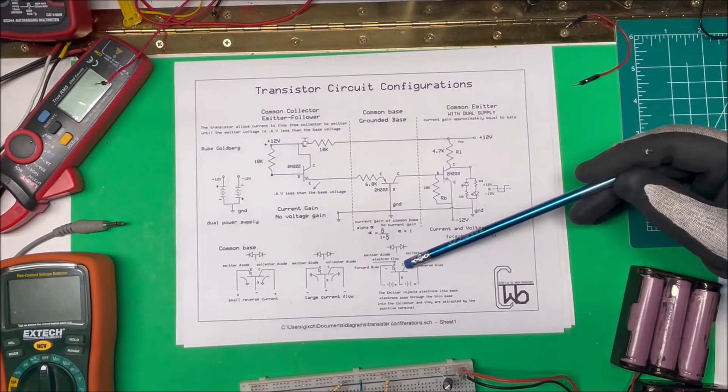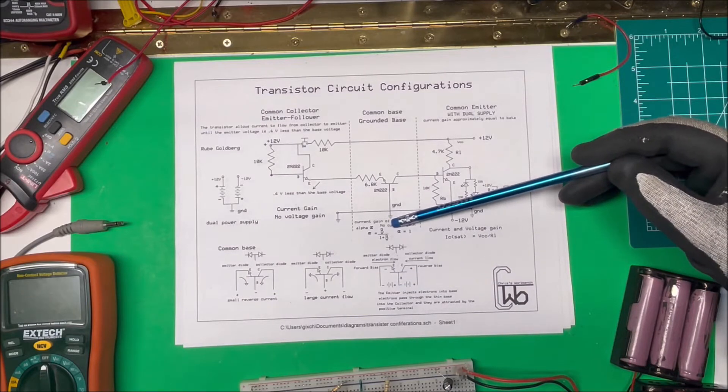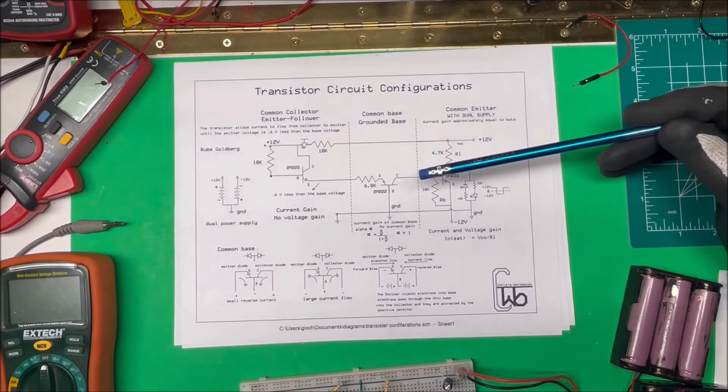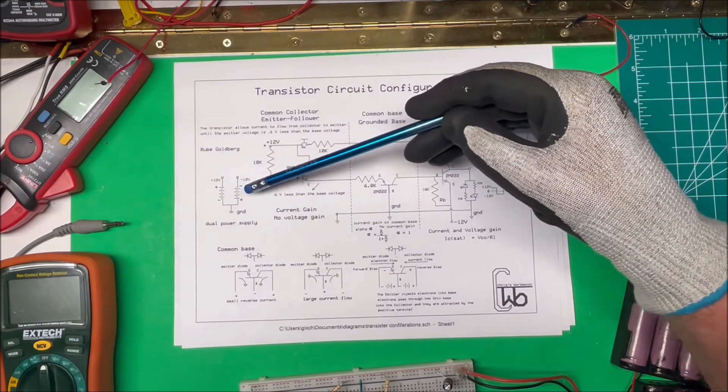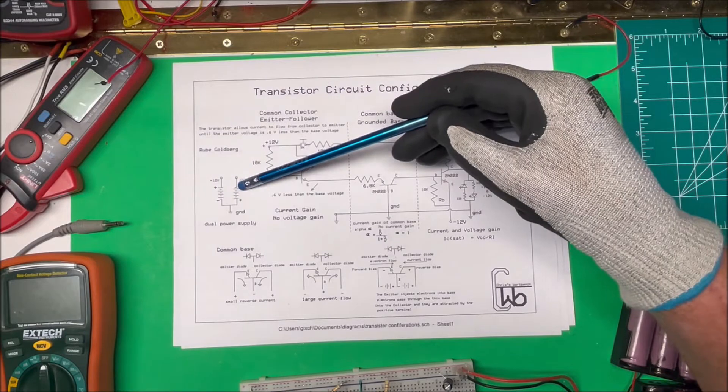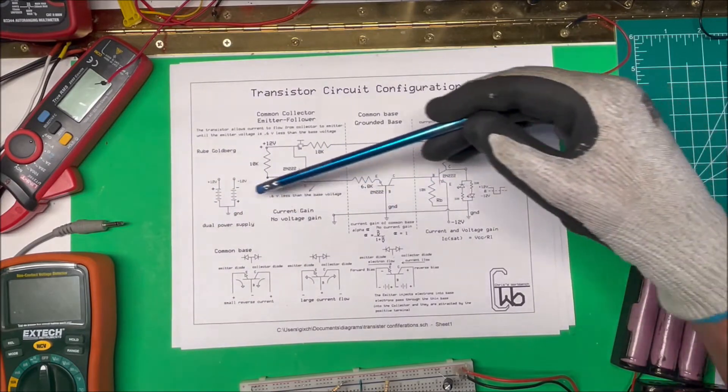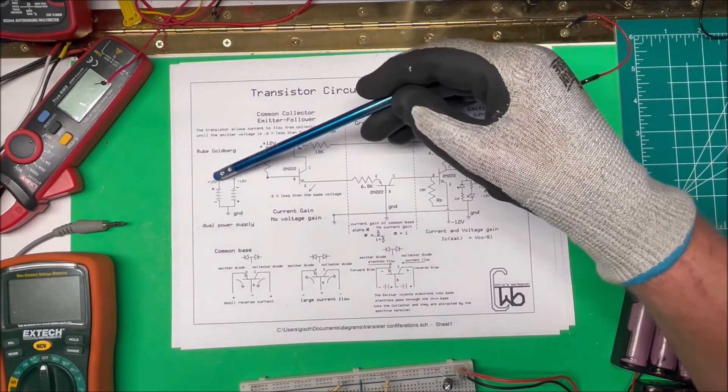So what you need is you need to have a negative on the emitter, positive on the collector, and this ground here has to be grounded. In order to do that, I'm using a dual power supply that I made out of a set of batteries. So I have positive and negative and negative to positive here, and the negative and positive here are tied together.